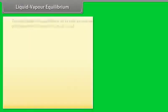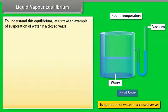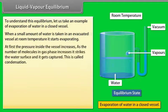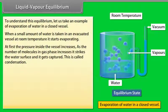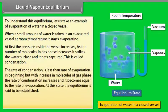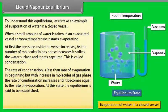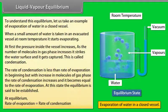Liquid-Vapour Equilibrium: Consider evaporation of water in a closed vessel. When a small amount of water is taken in an evacuated vessel at room temperature, it starts evaporating and the pressure inside the vessel increases. As the number of molecules in the gas phase increases, they strike the water surface and get captured — this is called condensation. Initially, the rate of condensation is less than the rate of evaporation, but as gas-phase molecules increase, the rate of condensation rises until it equals the rate of evaporation and equilibrium is established.